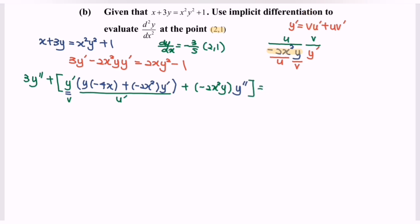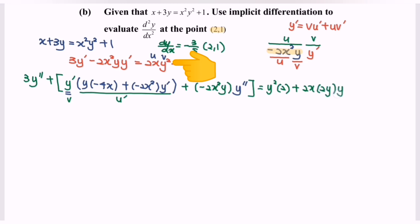On the right side, focus on 2x·y². Let u be 2x and v be y². Differentiating gives y² times u prime which is 2, plus 2x times v prime. Differentiating y² gives 2y·y prime. Differentiating negative 1 gives 0. Rewrite the situation.